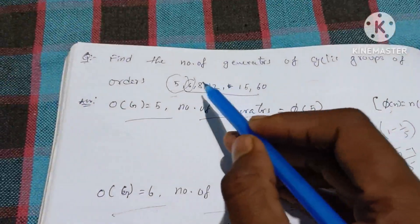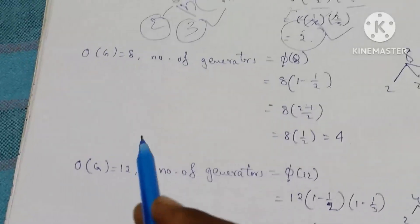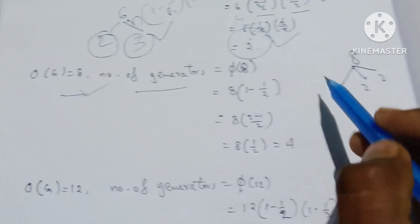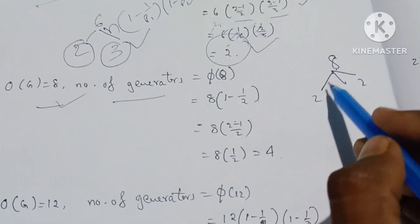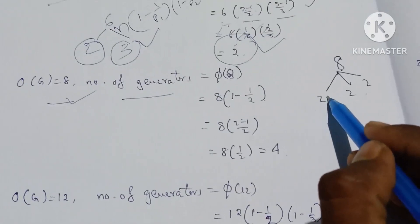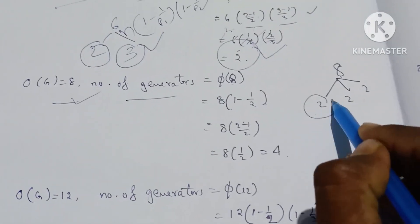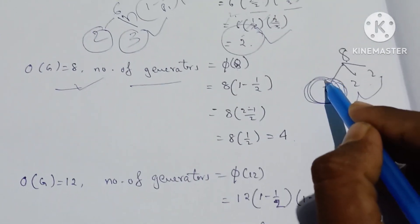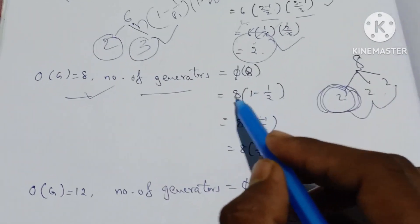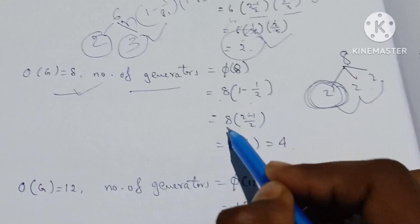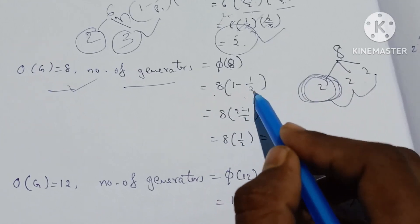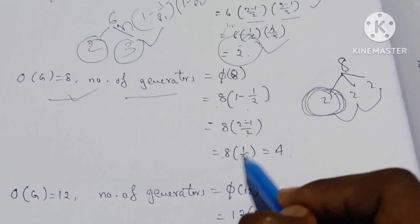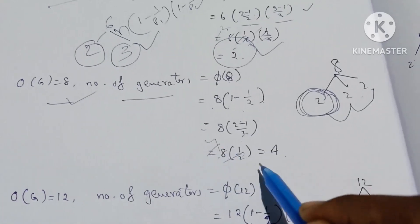Next, order 8. The order of G is equal to 8. Number of generators is equal to φ(8). 8 equals 2 cubed, so there is only a single prime factor: 2. Therefore φ(8) = 8 into 1 minus 1 by 2, which is 8 into 1 by 2. That equals 4.